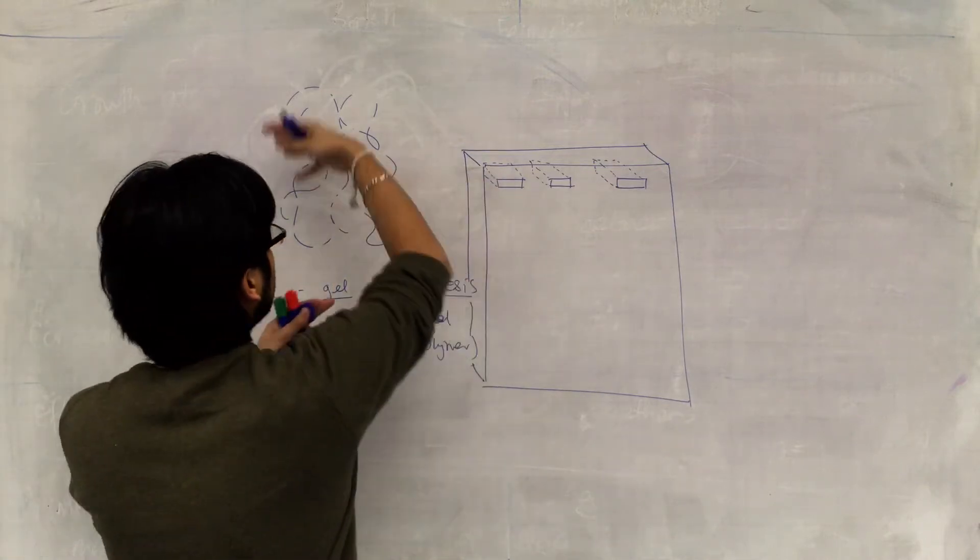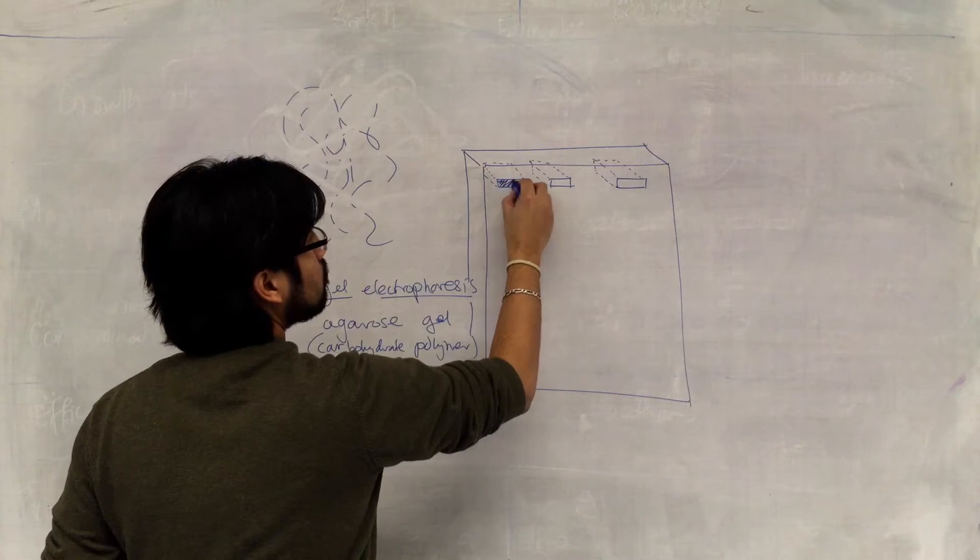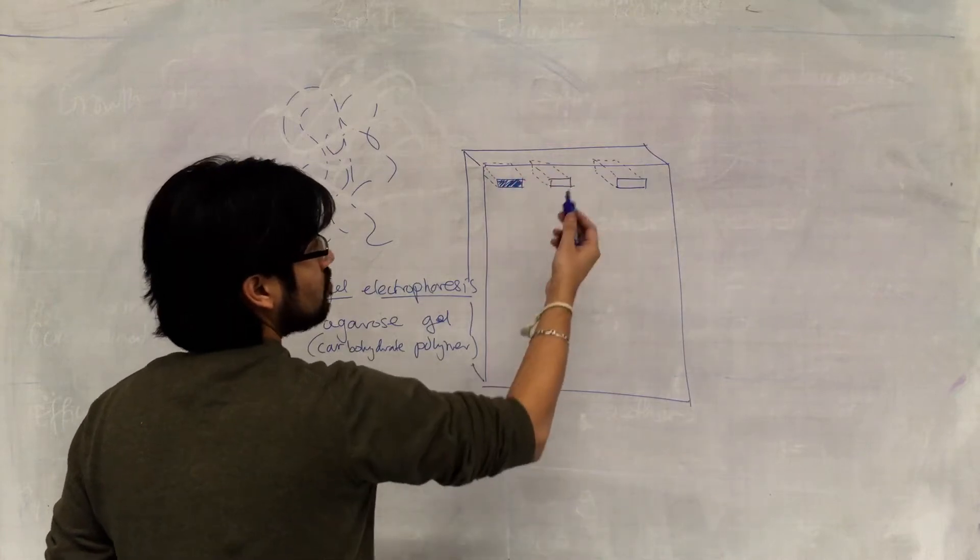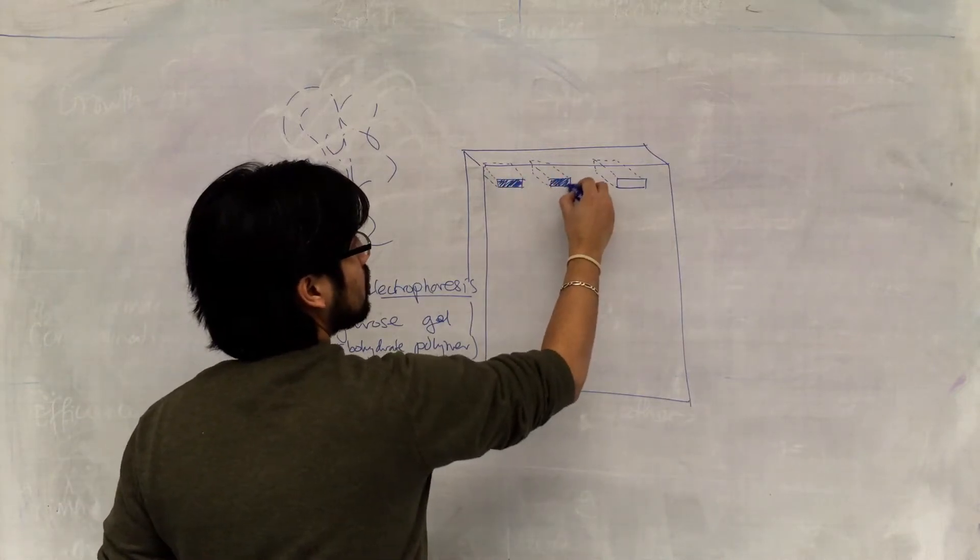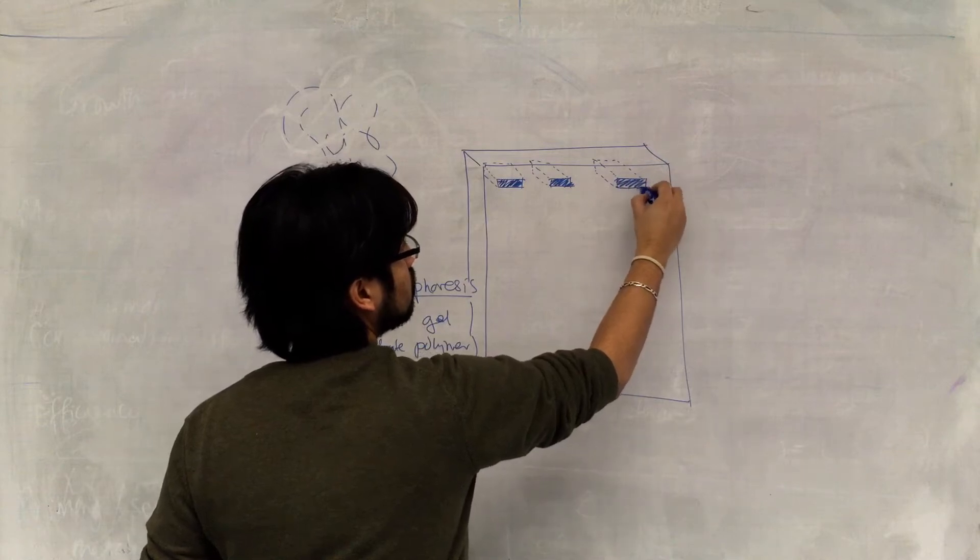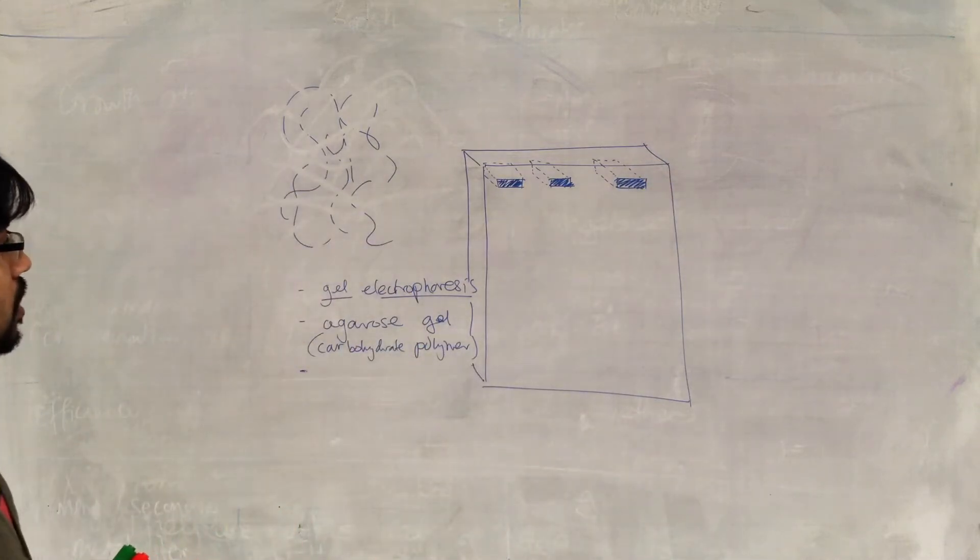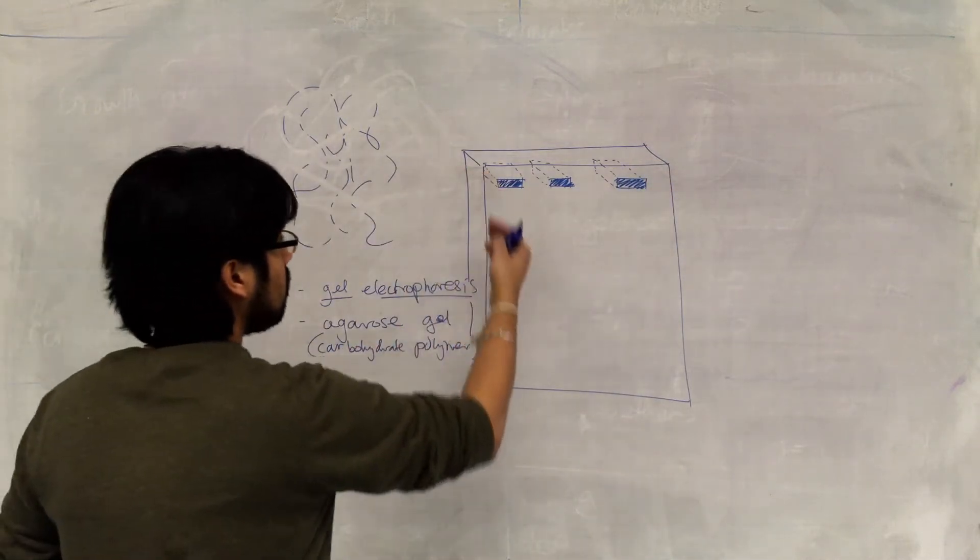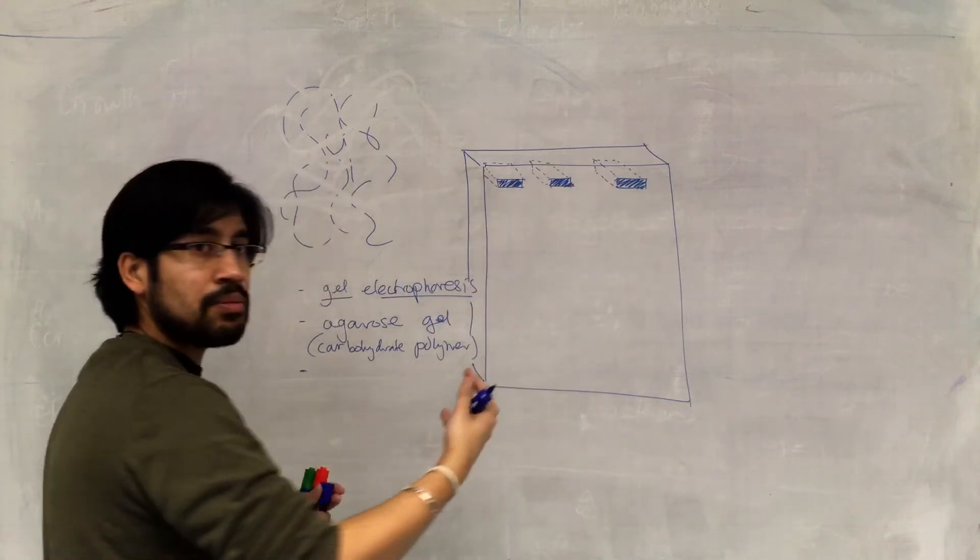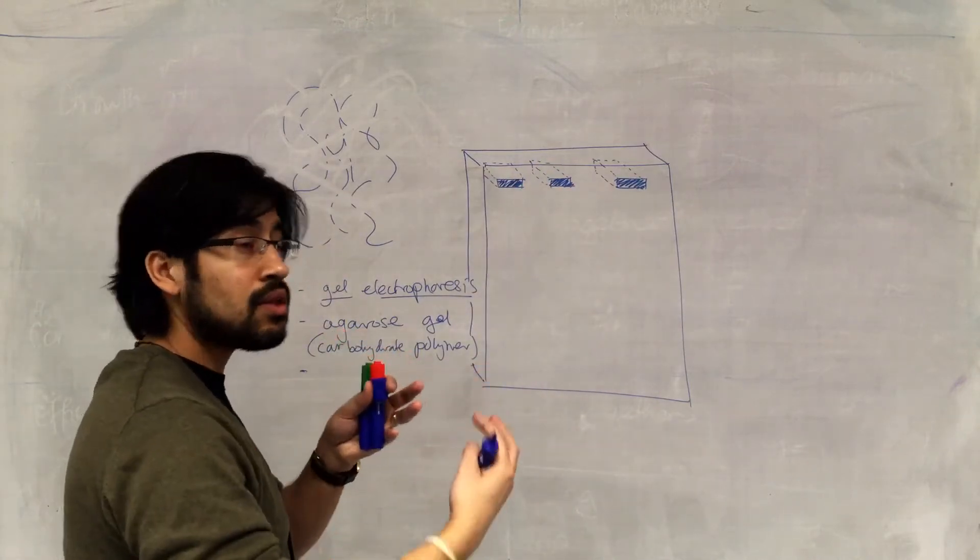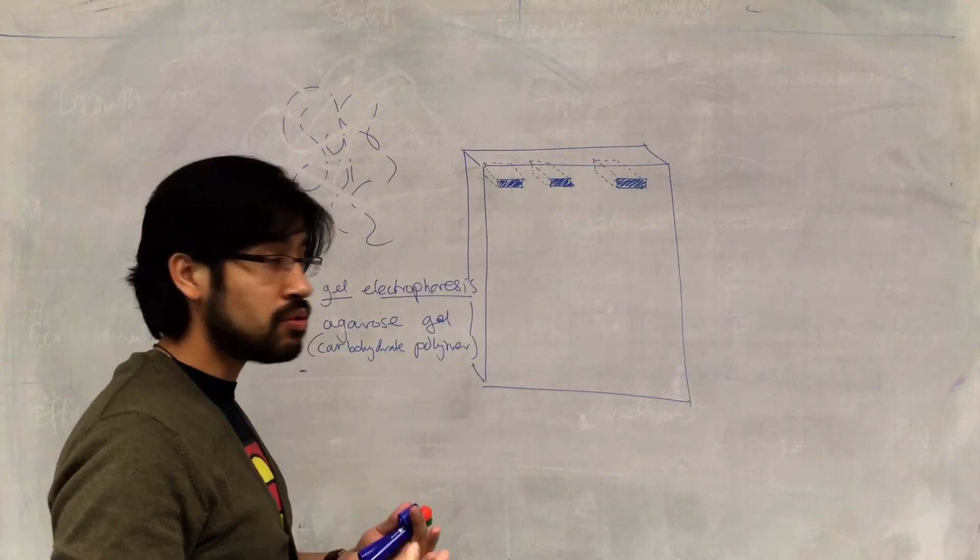We put our mixture of DNA samples in there. So let's just say we have one sample, we have another sample in there, and another sample of DNA there. And remember, this gel substance has got pores in it through which DNA molecules can move.